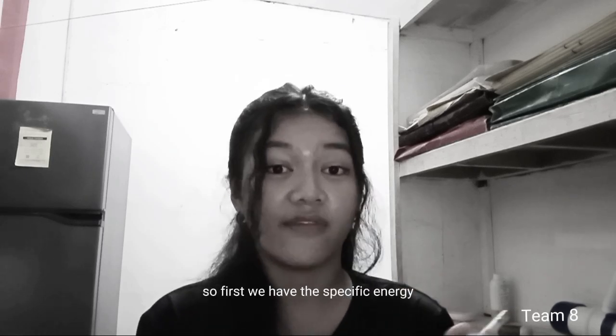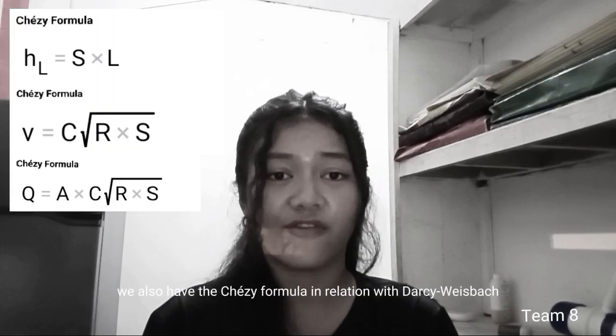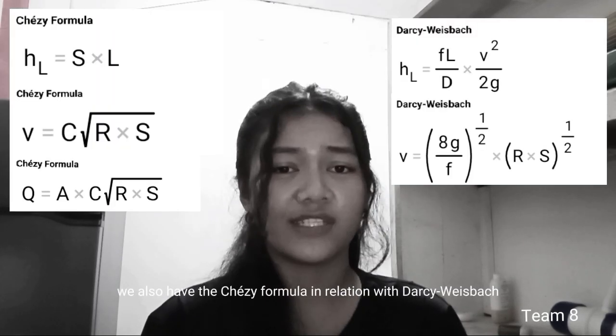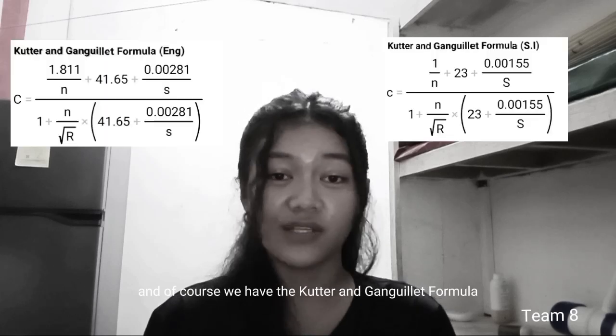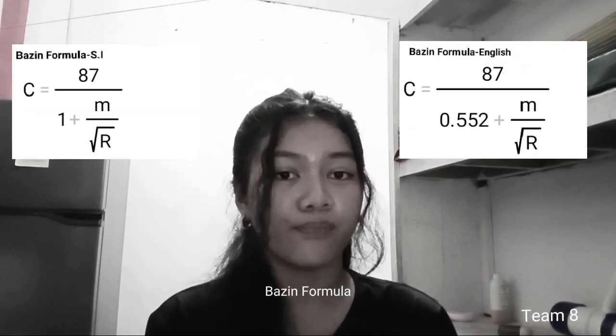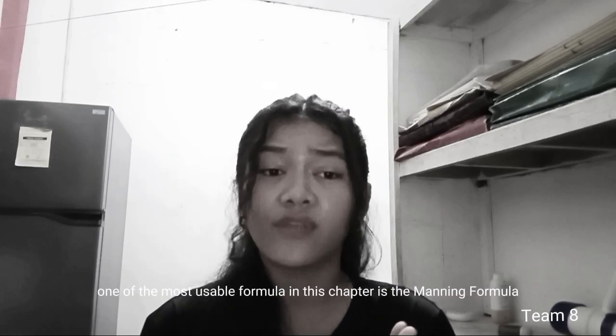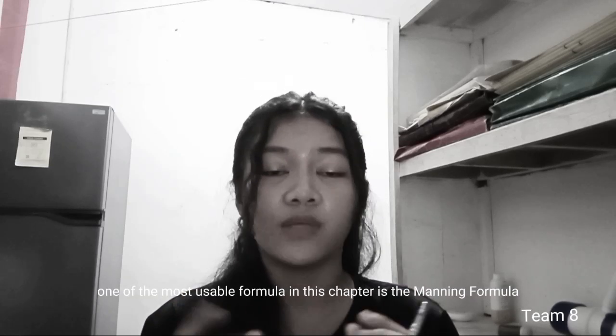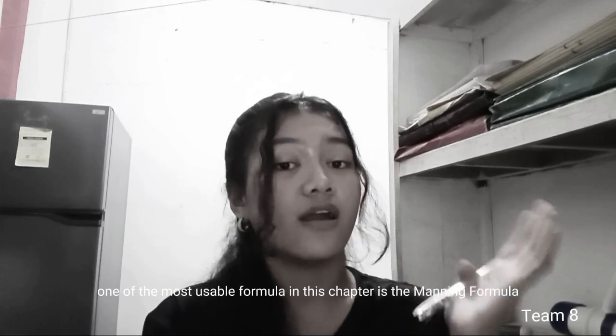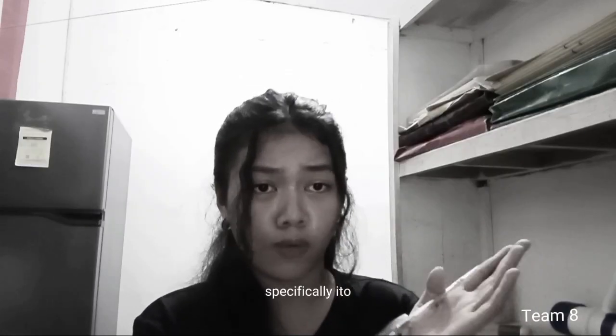So first we have the specific energy. We also have the Chezy formula in relation with our series spec. And of course we have the Kutter and Ganguillet formula, Basin formula, Powell equation, and of course one of the most usable formulas in this chapter is the Manning formula, specifically ito.